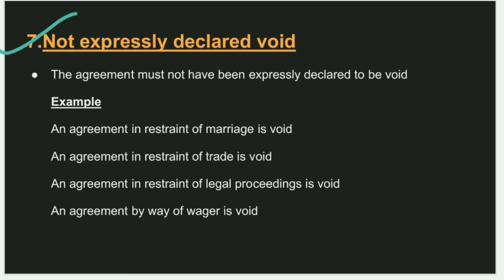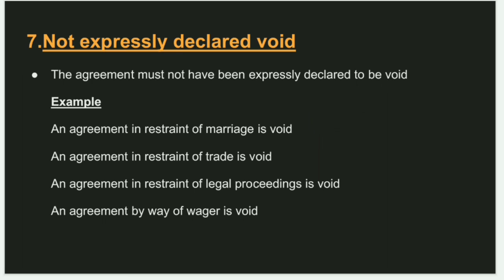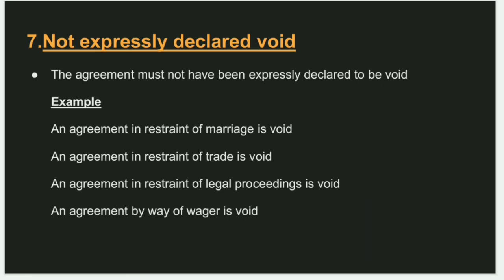The seventh essential is that the contract must not be expressly declared void. Certain agreements are void under the law, such as agreements in restraint of trade and agreements of wager. If you enter into such an agreement, it will be void.